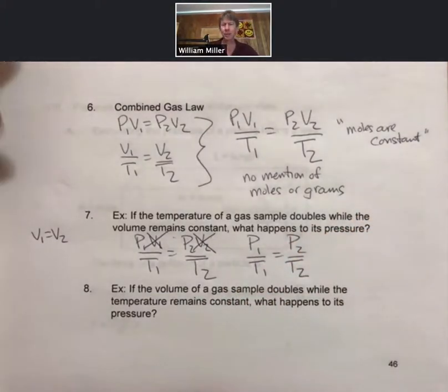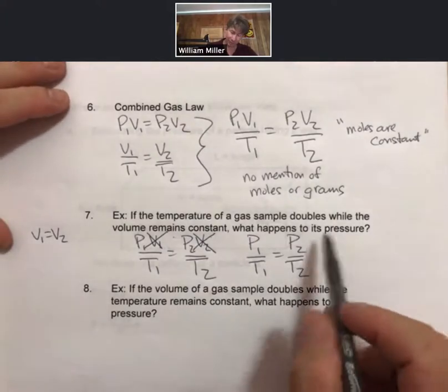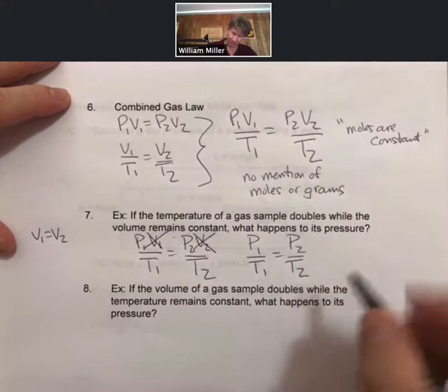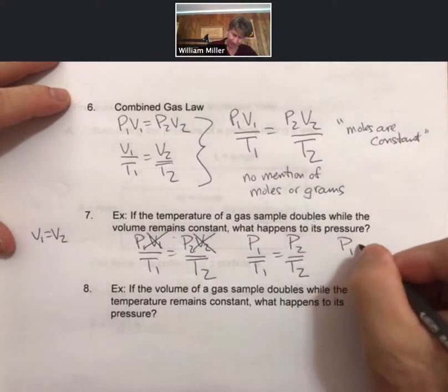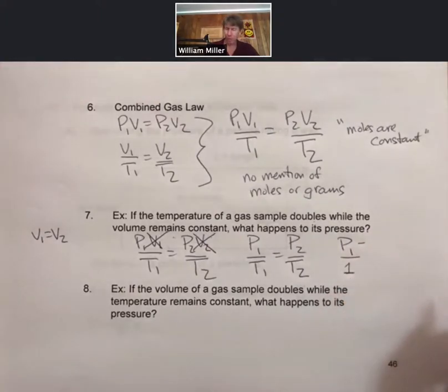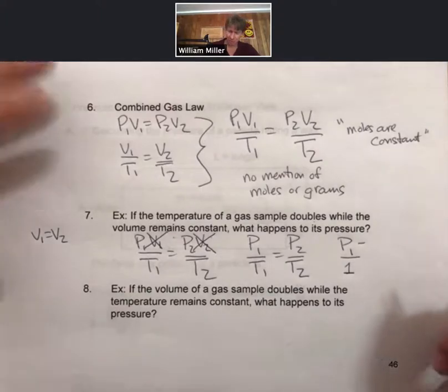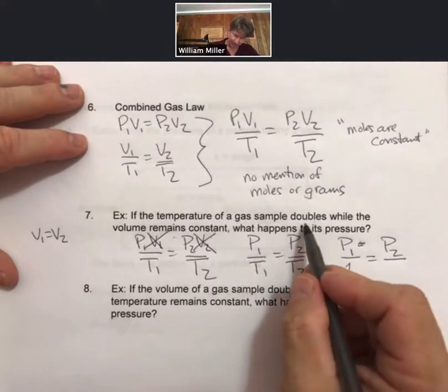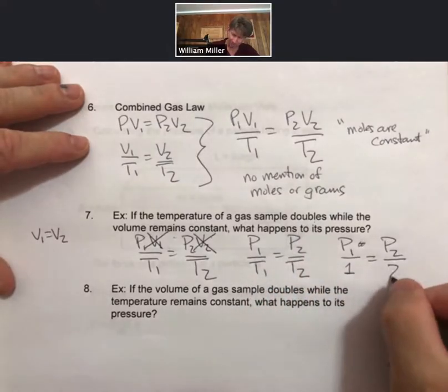And there's lots of ways to deal with this, but one of them is, say if the temperature of a gas sample doubles. And what I like to do is, so T1, let's just call T1, 1. It technically means 1 Kelvin, but it's an easy number to do math with. So and then P2, so temperature doubles, 2.